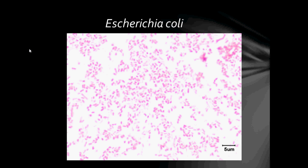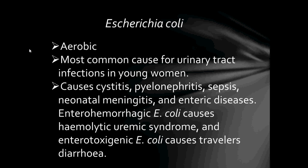This is Escherichia coli under microscopic view. Escherichia coli are aerobic and the most common cause of urinary tract infections in young women, causing cystitis, pyelonephritis, sepsis, neonatal meningitis, and enteric diseases. The enterohemorrhagic E. coli causes hemolytic uremic syndrome, and enterotoxigenic E. coli causes traveler's diarrhea.